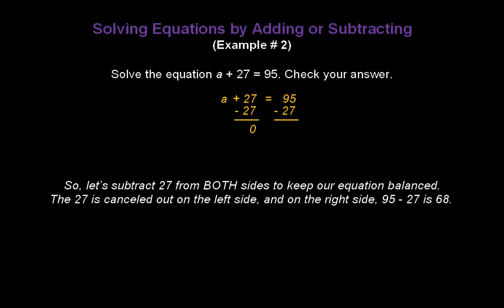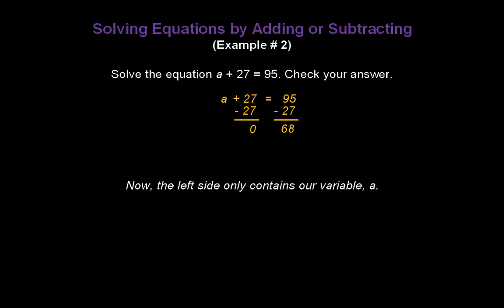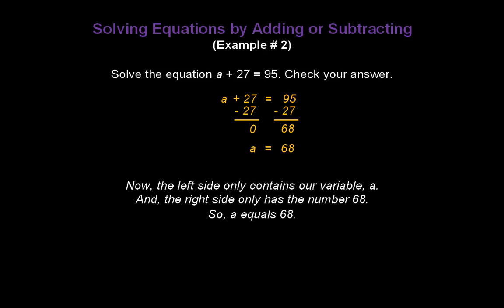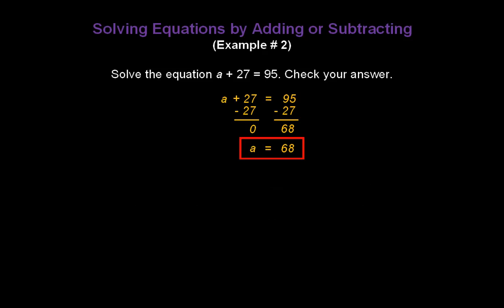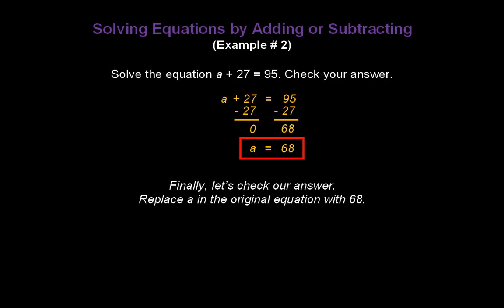On the right side, 95 minus 27 is 68. The left side only contains our variable a, and the right side only has the number 68 — so our answer is a equals 68. We can check by replacing a in the original equation with 68: 68 plus 27 equals 95, and in fact it does. Both sides are 95, so we're sure a is 68.